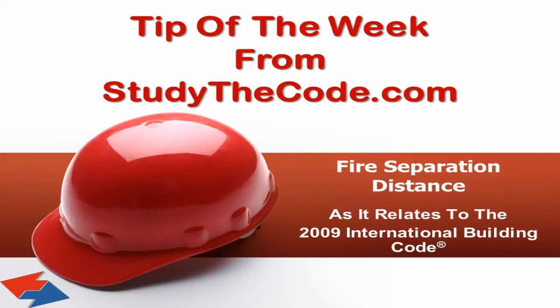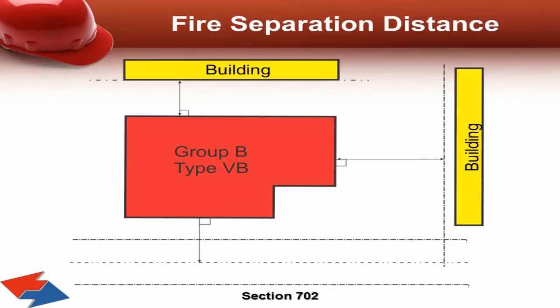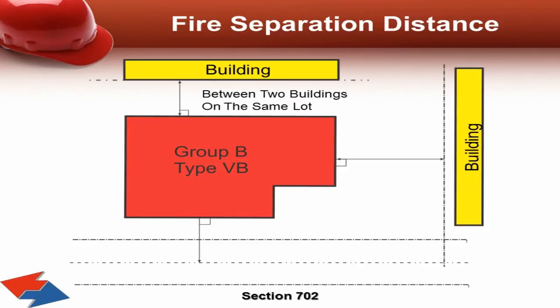Based on the 2009 International Building Code, fire separation distance is measured from the building face to an imaginary lot line between two buildings on the same property. This imaginary lot line can be located at any point between the two buildings.